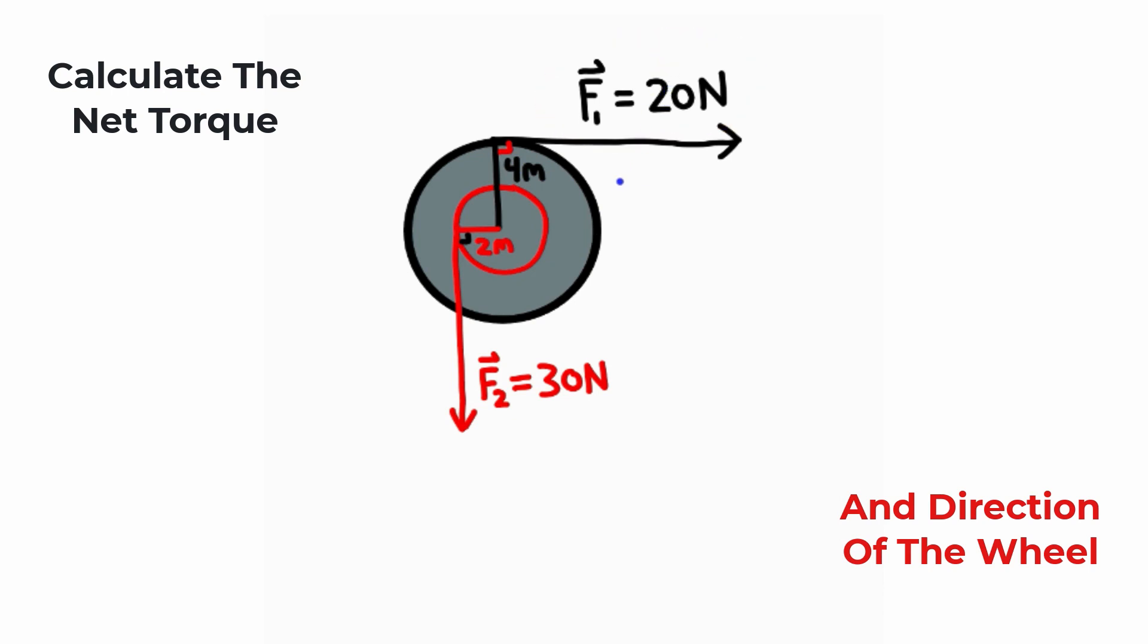The first force is influencing the wheel to rotate clockwise, so we're going to call this torque one. The second force is influencing this wheel to rotate counterclockwise. We're going to call this torque two.